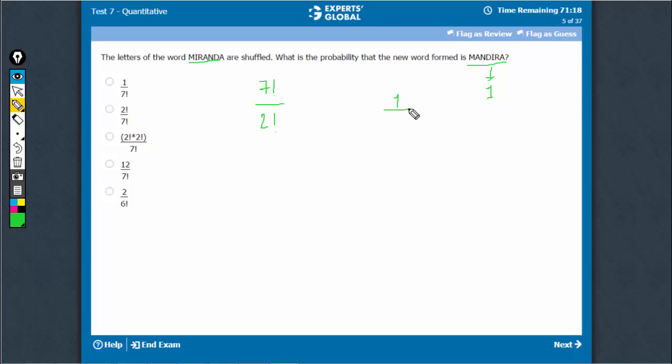The desired probability is 1 upon 7 factorial upon 2 factorial, which is 2 factorial upon 7 factorial. Let us find out the value. This is 2 upon 7 factorial. 6 factorial is 720 into 7.